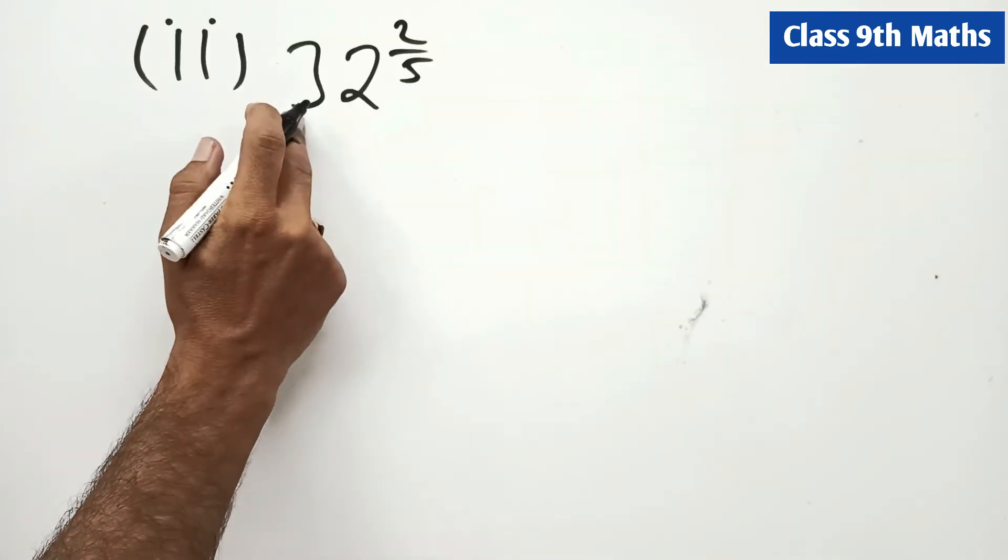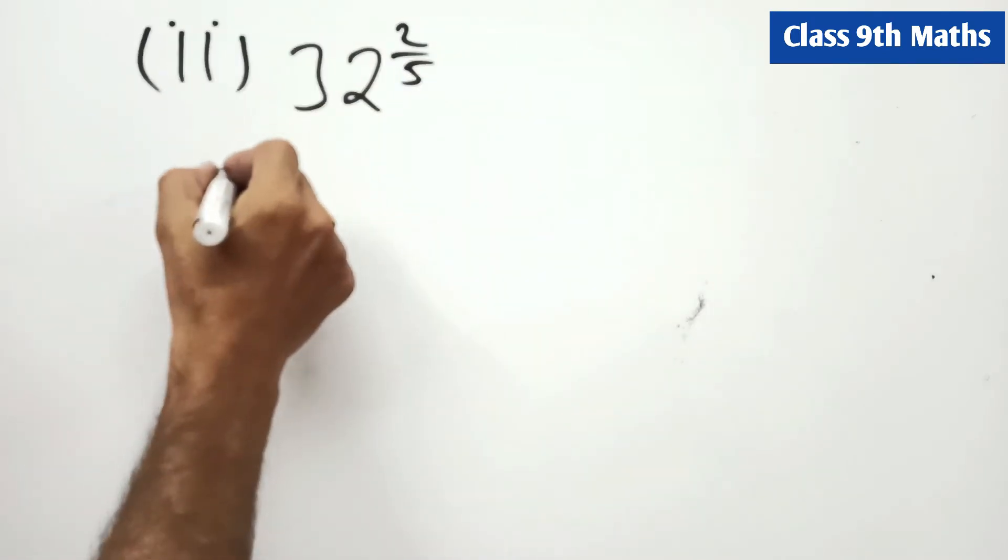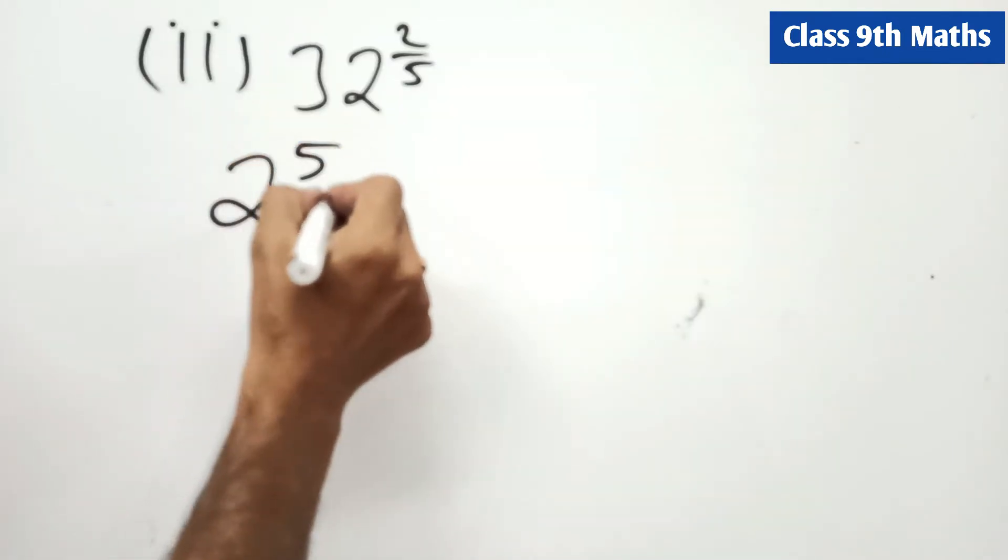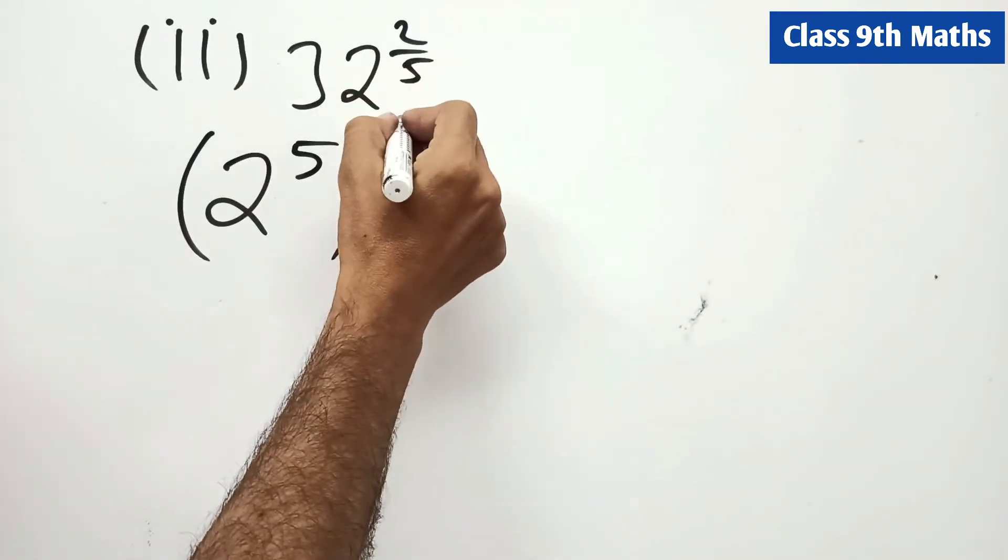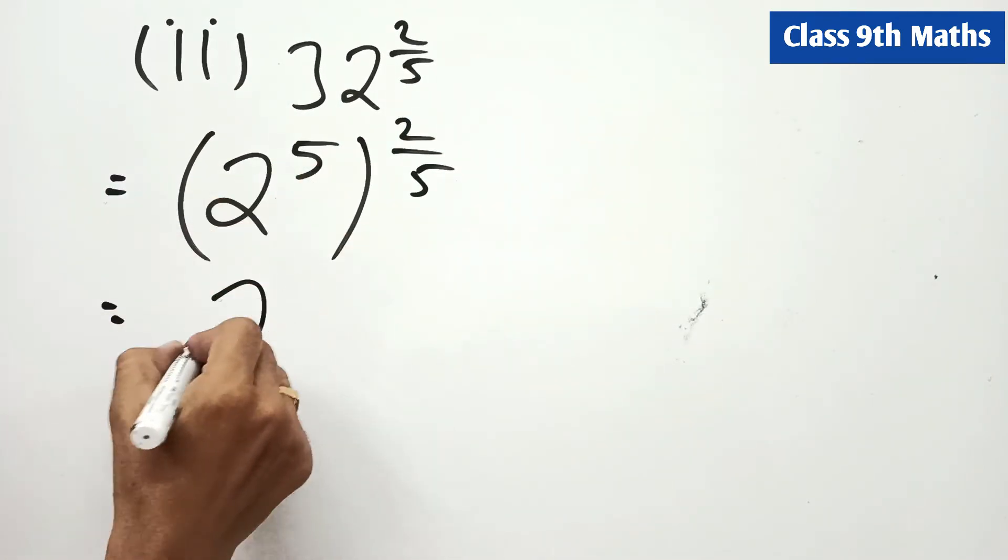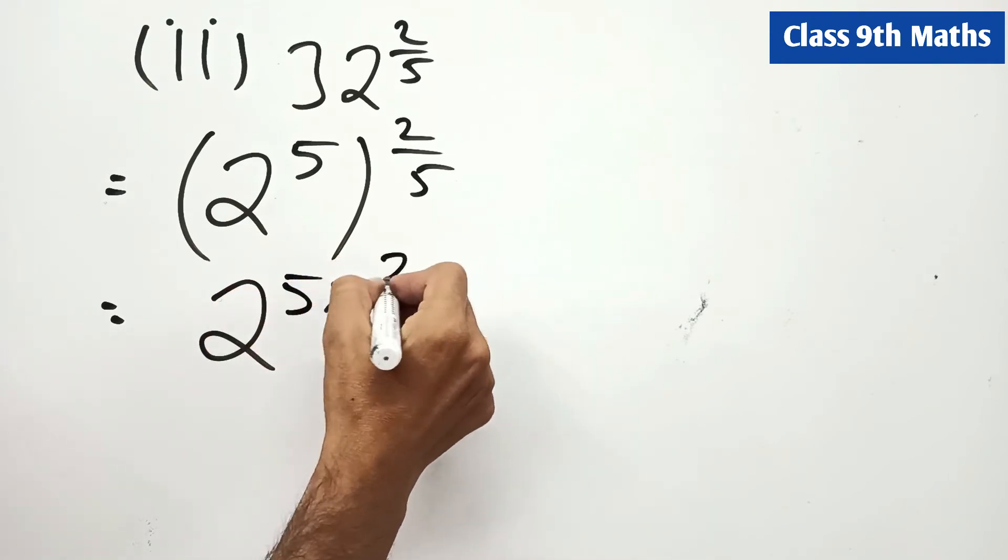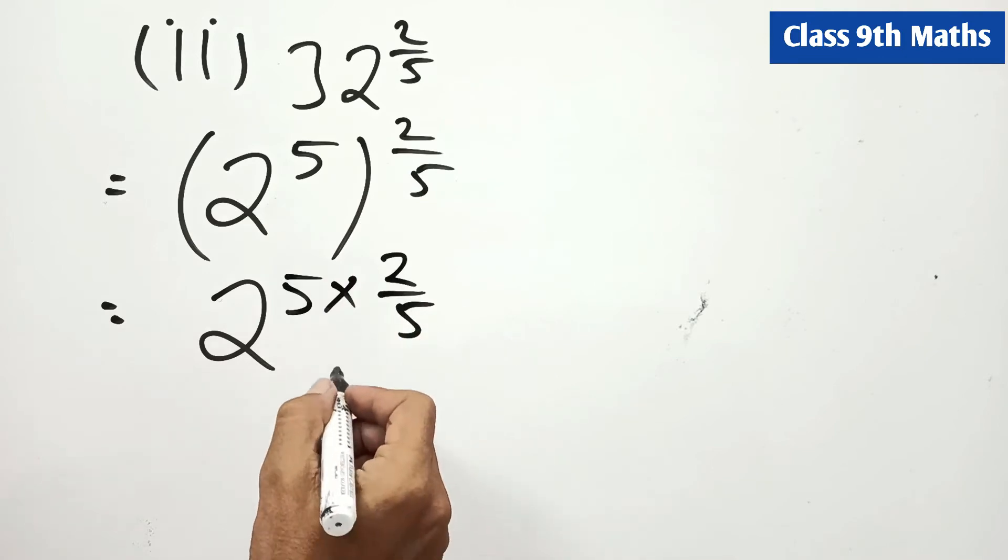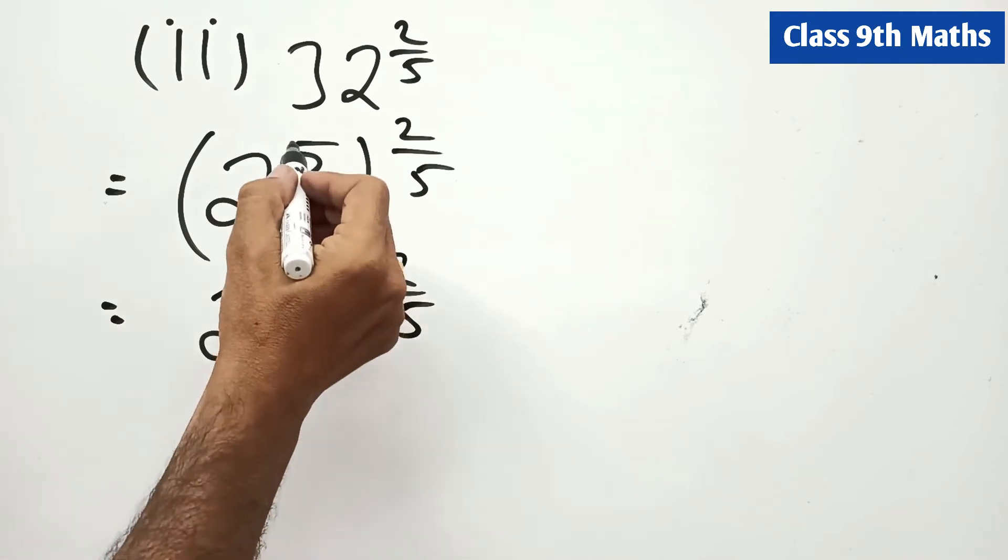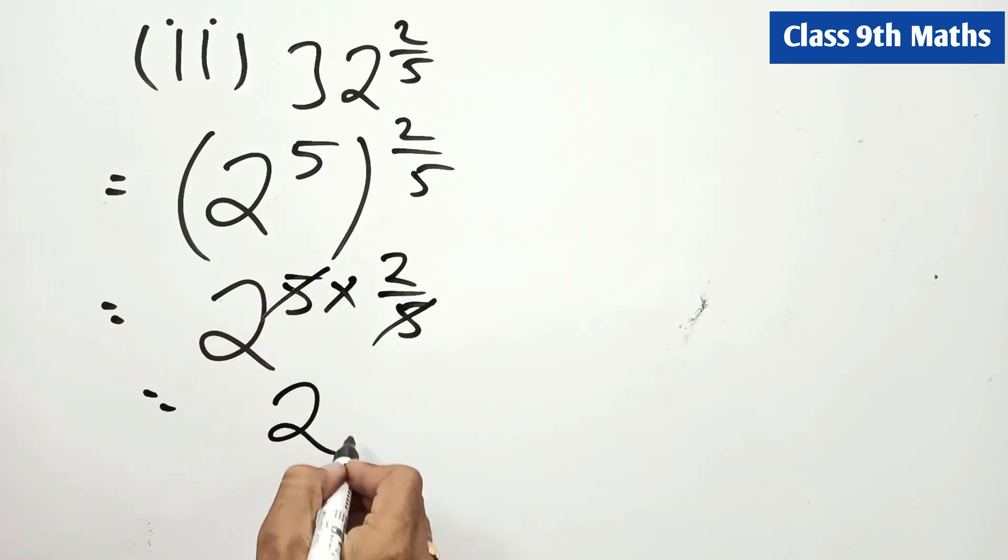Now students, 32 power 2/5. This is the power of 5. If you have questions, every time you have to mention. 5 and 2 by 5, so this cancels. So this is 2 squared means 4. So this is the answer.